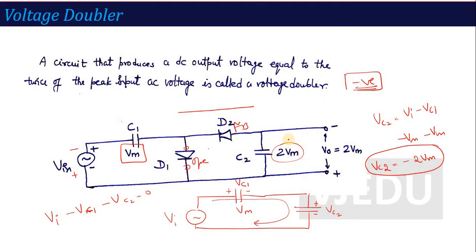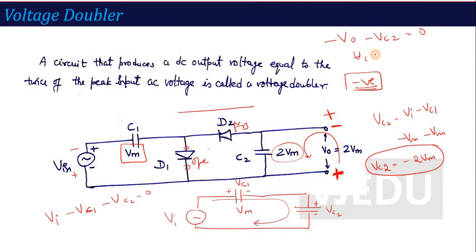Regarding polarity: the analysis gives VC2 = minus 2VM. Considering the actual polarity in the circuit — the lower terminal is positive and upper is negative — we apply KVL for output voltage: minus Vout minus VC2 = 0, so Vout = minus VC2. Since VC2 = minus 2VM, the output voltage becomes plus 2VM. Don't get confused by the polarity; the output voltage across the capacitor is twice the input peak voltage.